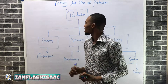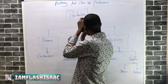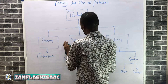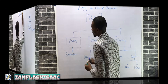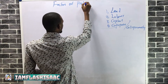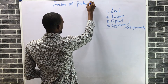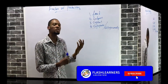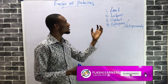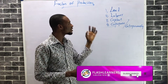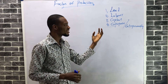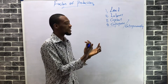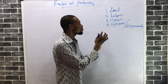I am Flash Isaac, and I just explained our production and the classes of production. Now, for production to be complete, you need land, labor, capital, and enterprise. These are the factors of production.